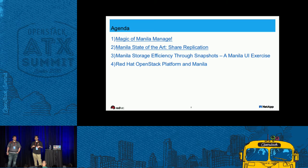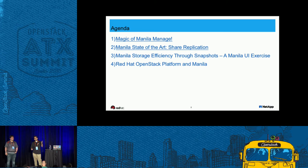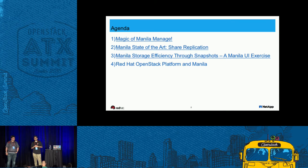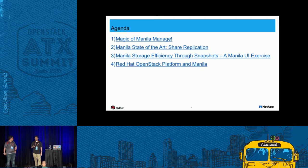With Share Replication, we are going to give you the ability to have a second copy or a third copy of your share in another storage controller or in another availability zone should there be a disaster. Beyond that, we have storage efficiency that you can see with snapshots and clones from snapshots, using a NetApp storage backend called Cluster Data ONTAP. Finally, Dustin's going to walk you through a demonstration of Red Hat OpenStack platform and Manila.